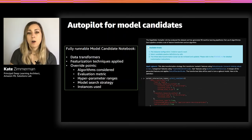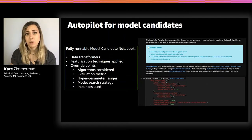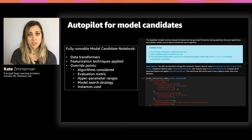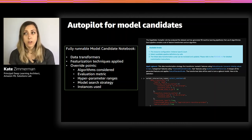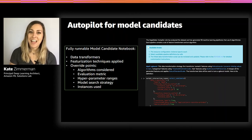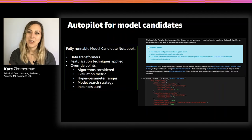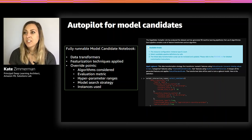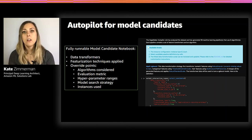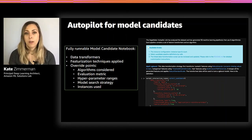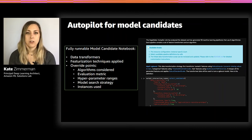Autopilot also generates a model candidate notebook — a fully runnable notebook that represents a blueprint showing how Autopilot built your model. It lists the data transformations used, the estimators selected — such as XGBoost, linear learner, or a feed-forward neural network called multilayer perceptron — and what hyperparameter combinations were tried. You can also use this notebook for compliance purposes, such as explaining to other data scientists how the model was created, what algorithm was selected, and how it was derived, with references to AWS documentation on implementations of XGBoost, linear learner, and more.